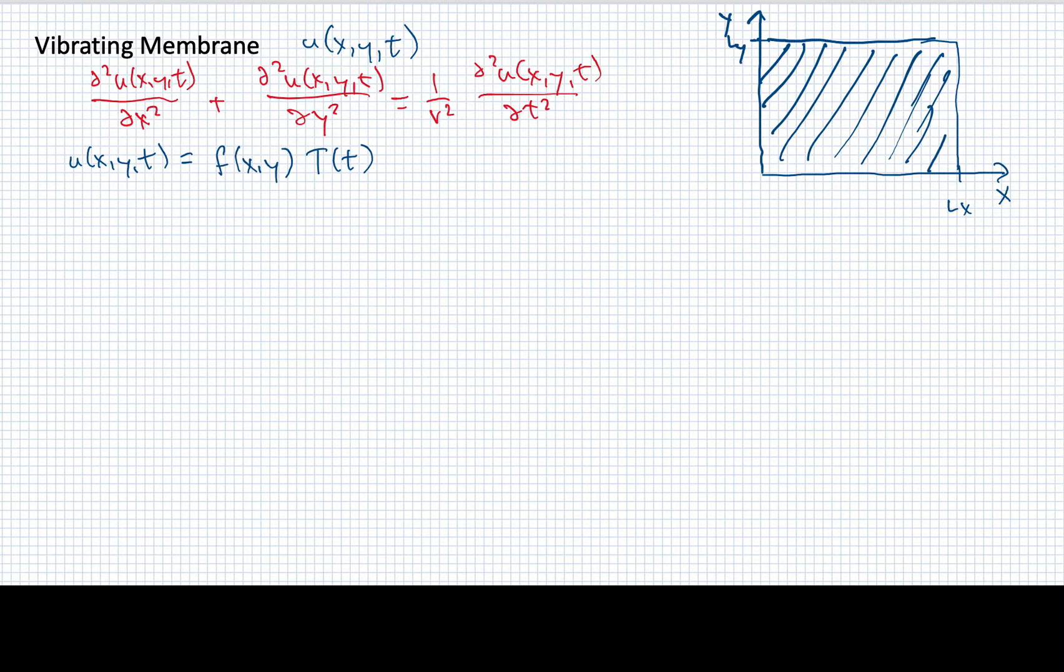Let me show you what the separation of variables will lead to. If we plug this expression for u of x, y, and t into this equation, then divide by u of x, y, and t, what we'll end up getting is an equation that looks like this. We'll have 1 over v squared t of t times the second derivative of t with respect to t. We'll then also get a linear partial differential equation part that looks like this, 1 over f of x and y times the second derivative of f with respect to x and the second derivative with respect to y.